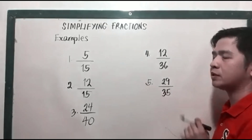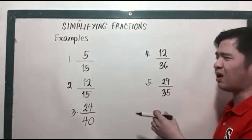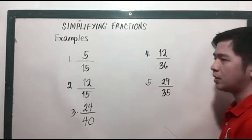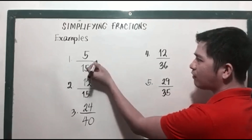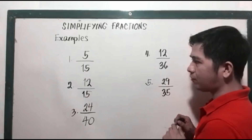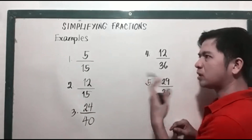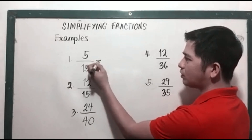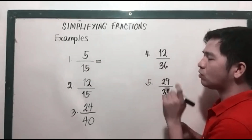Number one, we have 5 over 15. Many students can find the answer easily by reducing the fraction to its lowest term. Some of you can find that 5 and 15 can be divided by 5, but some of you cannot do that. So I'm going to show you how to do the prime factorization so that you can find the lowest term.